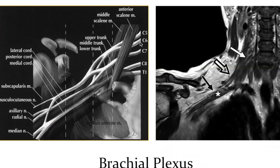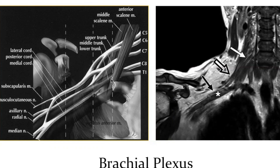C5 and C6 roots join to form the upper trunk; C7 root continues as the middle trunk; C8 and D1 roots join to form the lower trunk. The trunks divide into anterior and posterior divisions, which join to form the cords. The posterior divisions of all three trunks — upper, middle, and lower — join to form the posterior cord. The anterior division of the lower trunk continues as the medial cord, and the anterior divisions of the upper and middle trunks join to form the lateral cord.